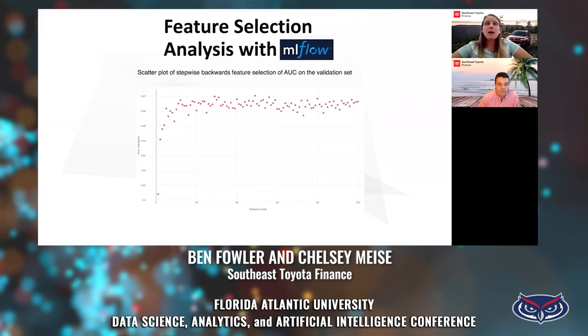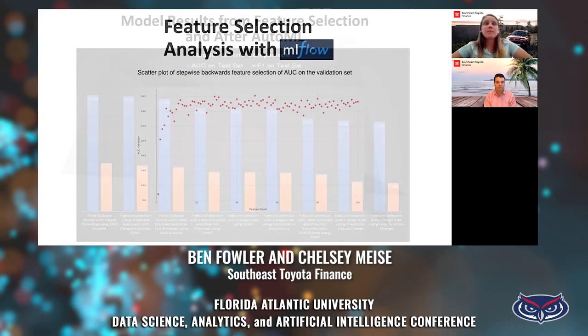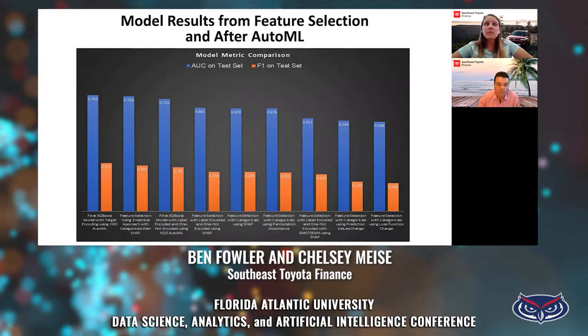Using MLflow, you can see a scatter plot of model runs logged beginning with 100 features and using stepwise backward feature selection, showing how model performance changes while eliminating one feature at a time. The key is to select the fewest features with the highest AUC. In summary, we found the optimal feature set using the ensemble approach and H2O's AutoML to find optimal hyperparameters, resulting in a final XGBoost model with target encoding.